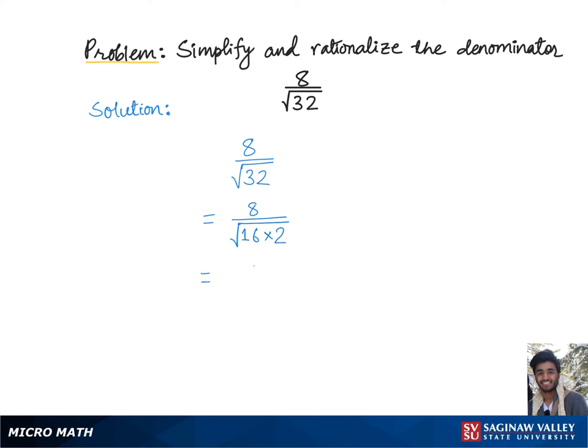Which is equal to 8 over, 16 is 4 squared which can be pulled out of the square root as simply 4, and we already have root 2. This 4 divides 8 to give 2.